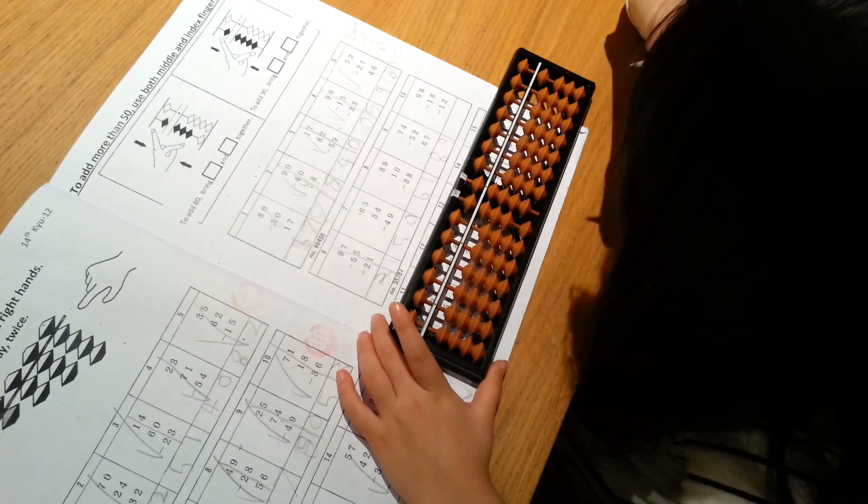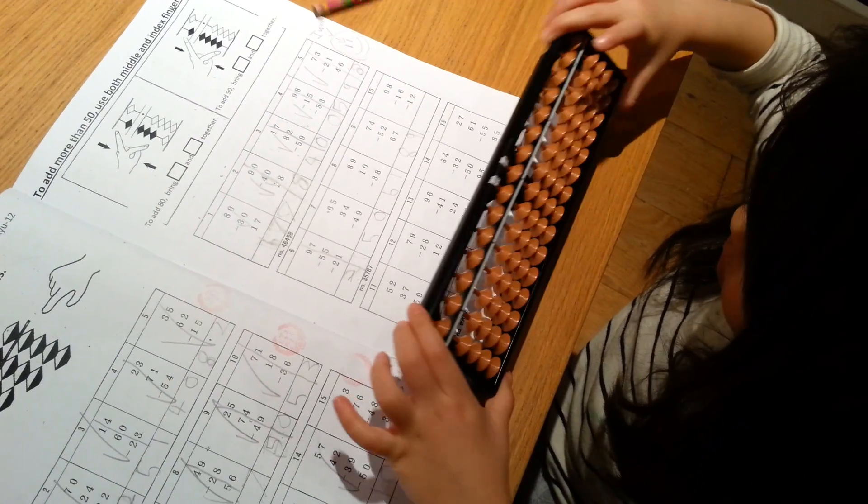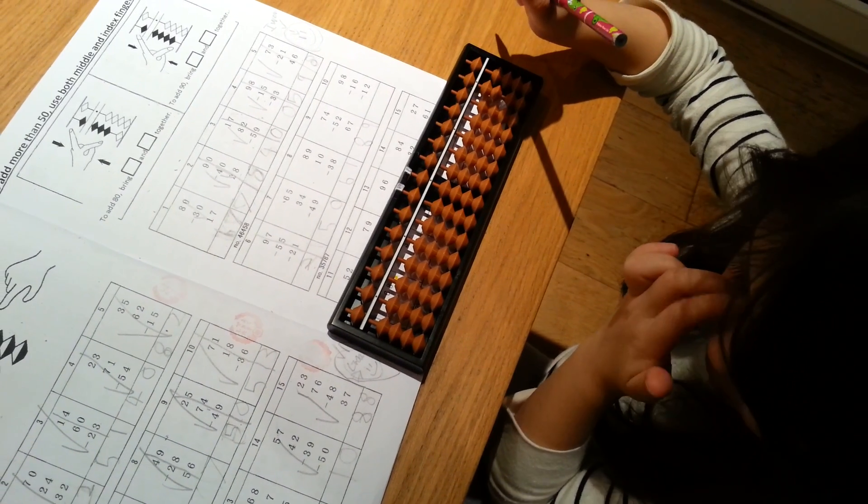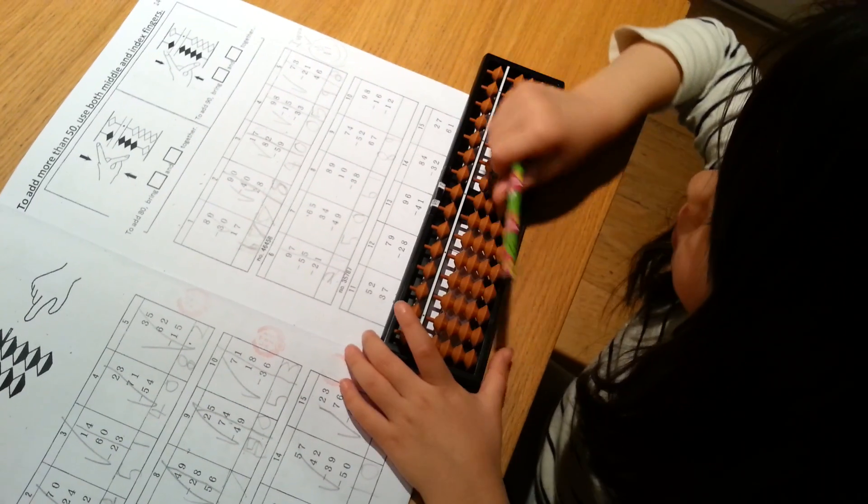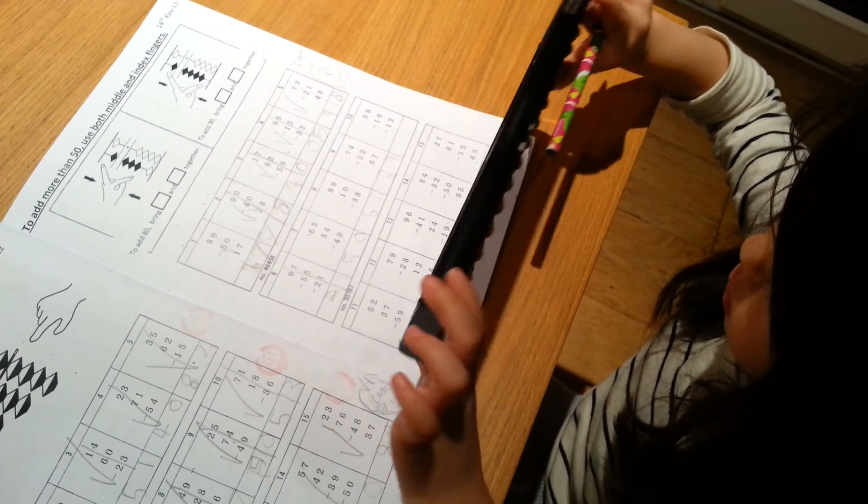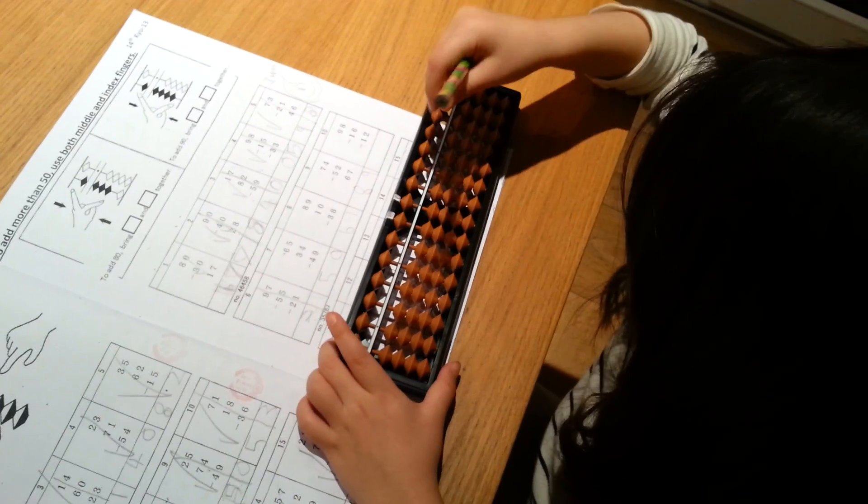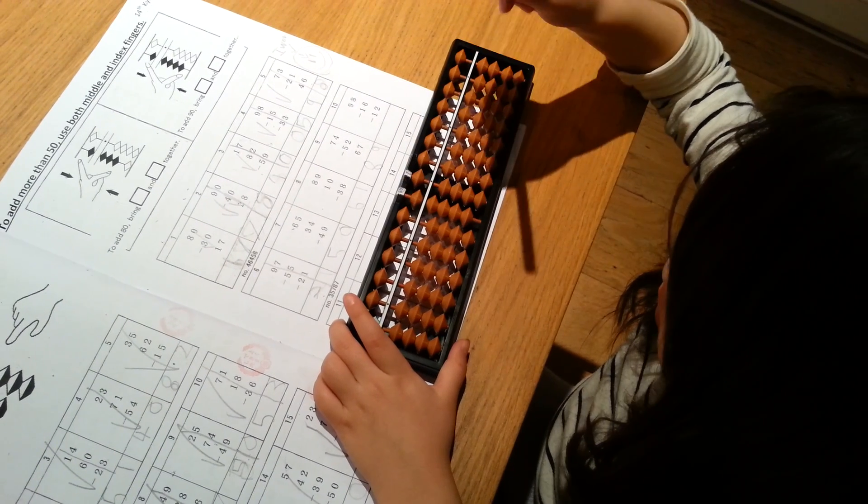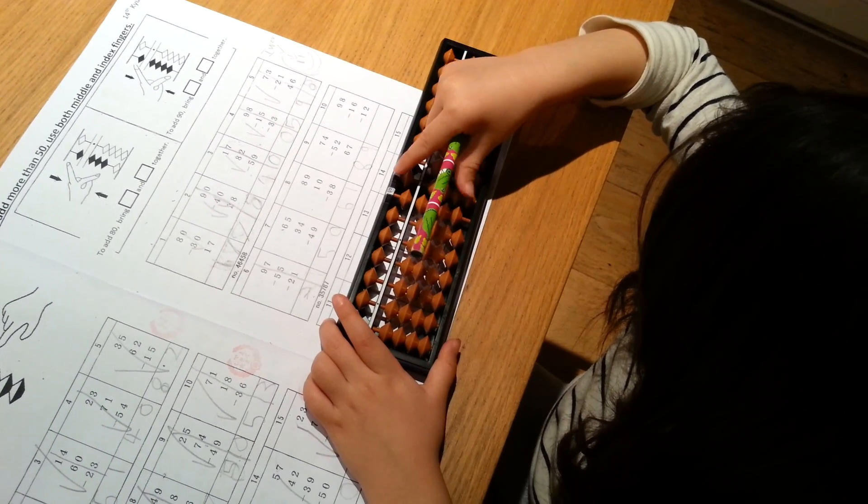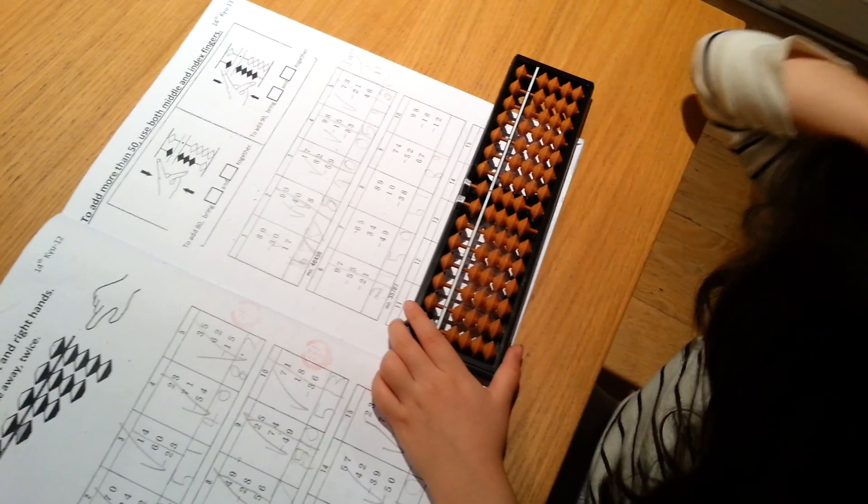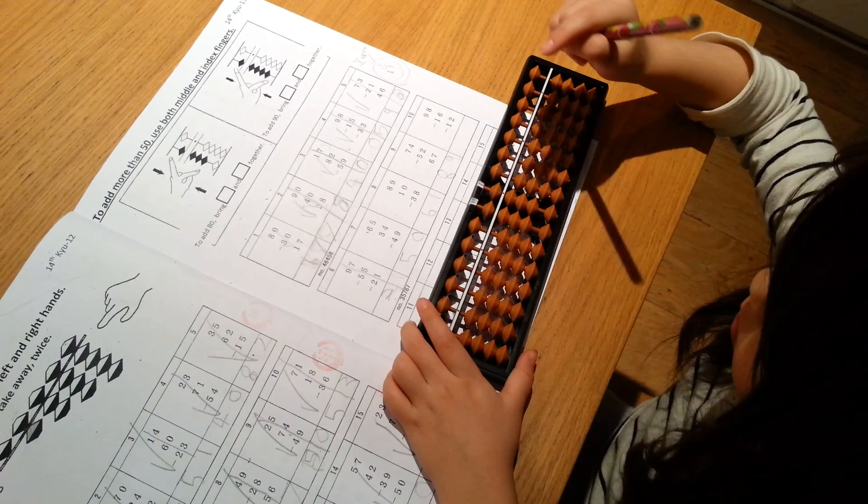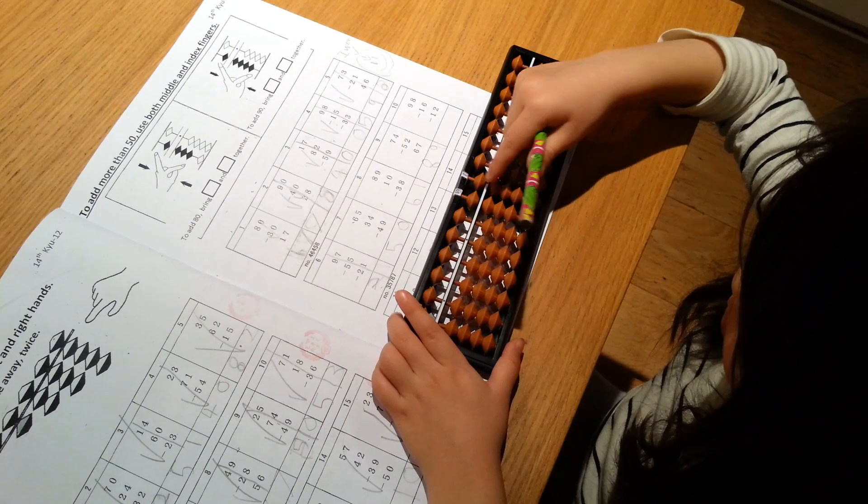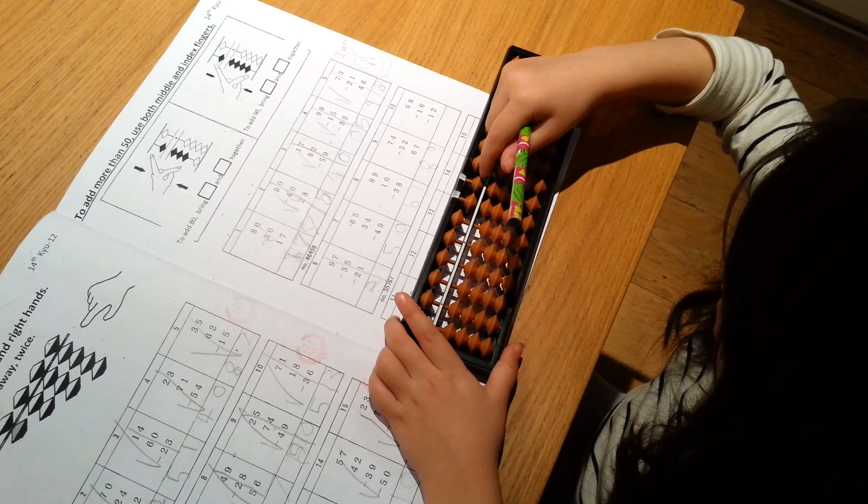Last one. Keep the pencil in your hand. 90. No, 90. 8. Take away... and 6. Take away 6, that's it.